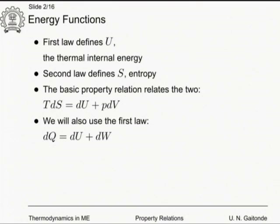We will also use the first law: dQ = dU + dW, where dW includes all modes of work. In the property relation, the left-hand side becomes T dS because we are considering a small elemental reversible process linking two neighboring states. Because it is a reversible process, dW has to be nothing but P dV — that is the difference.